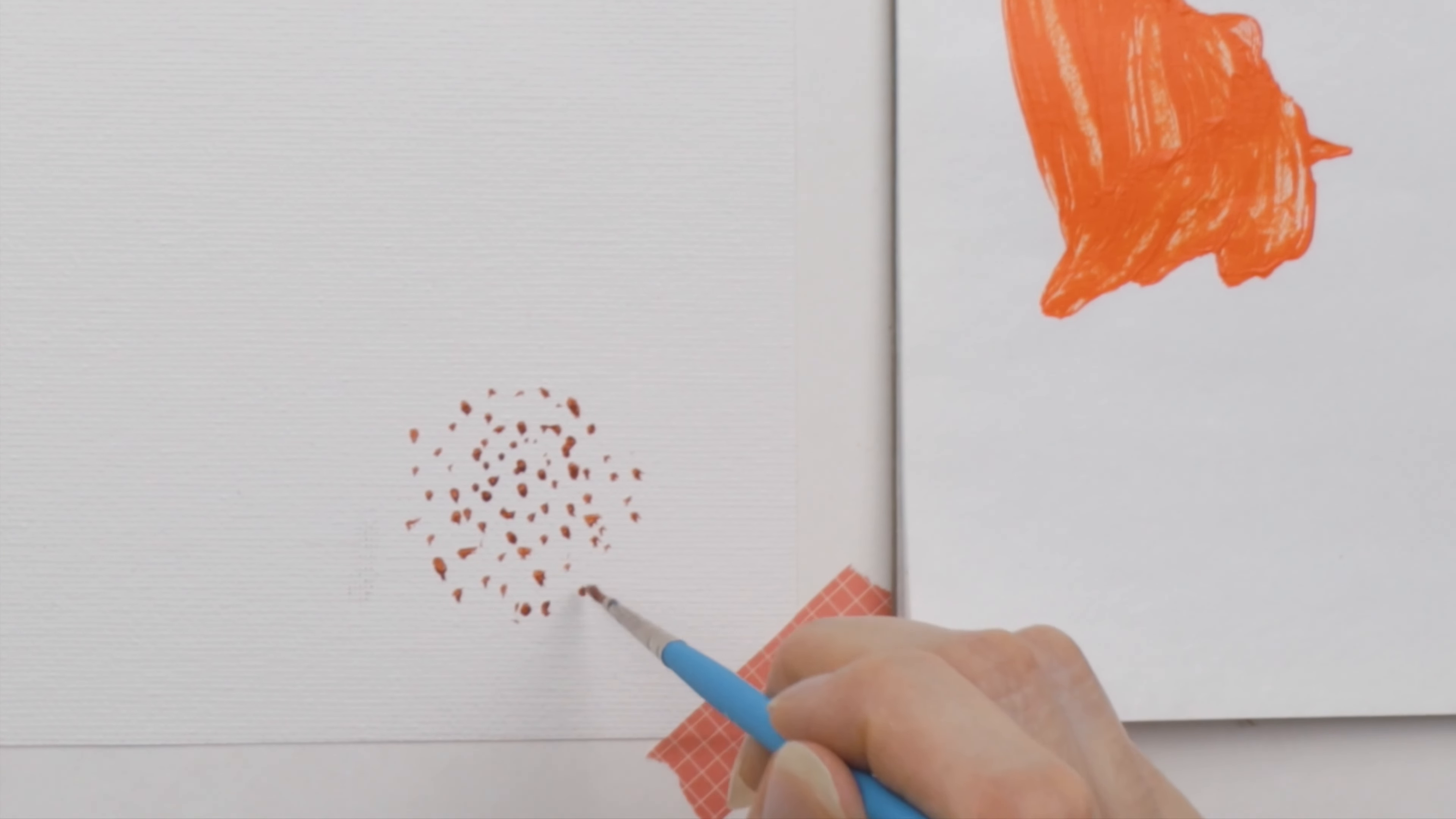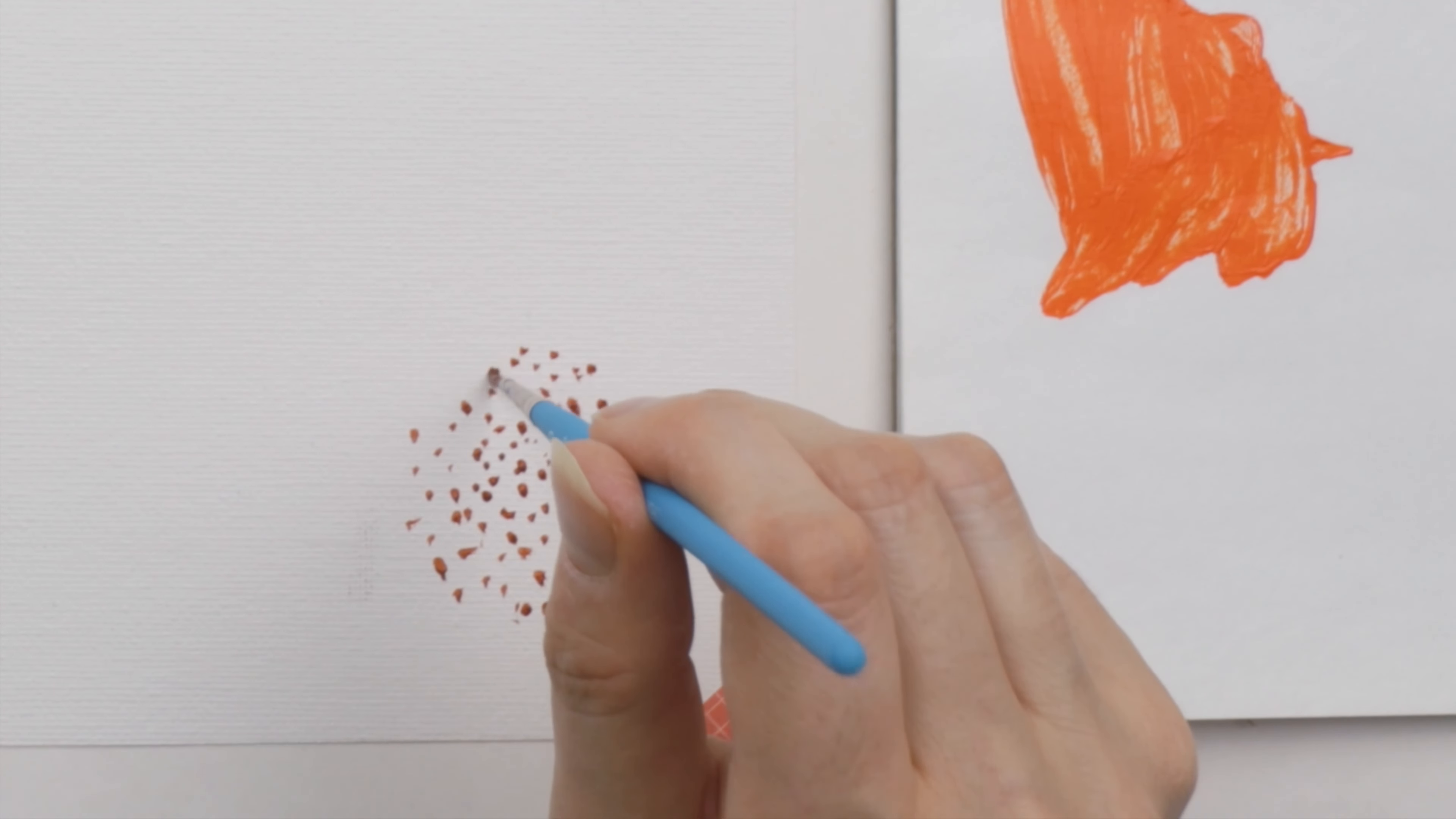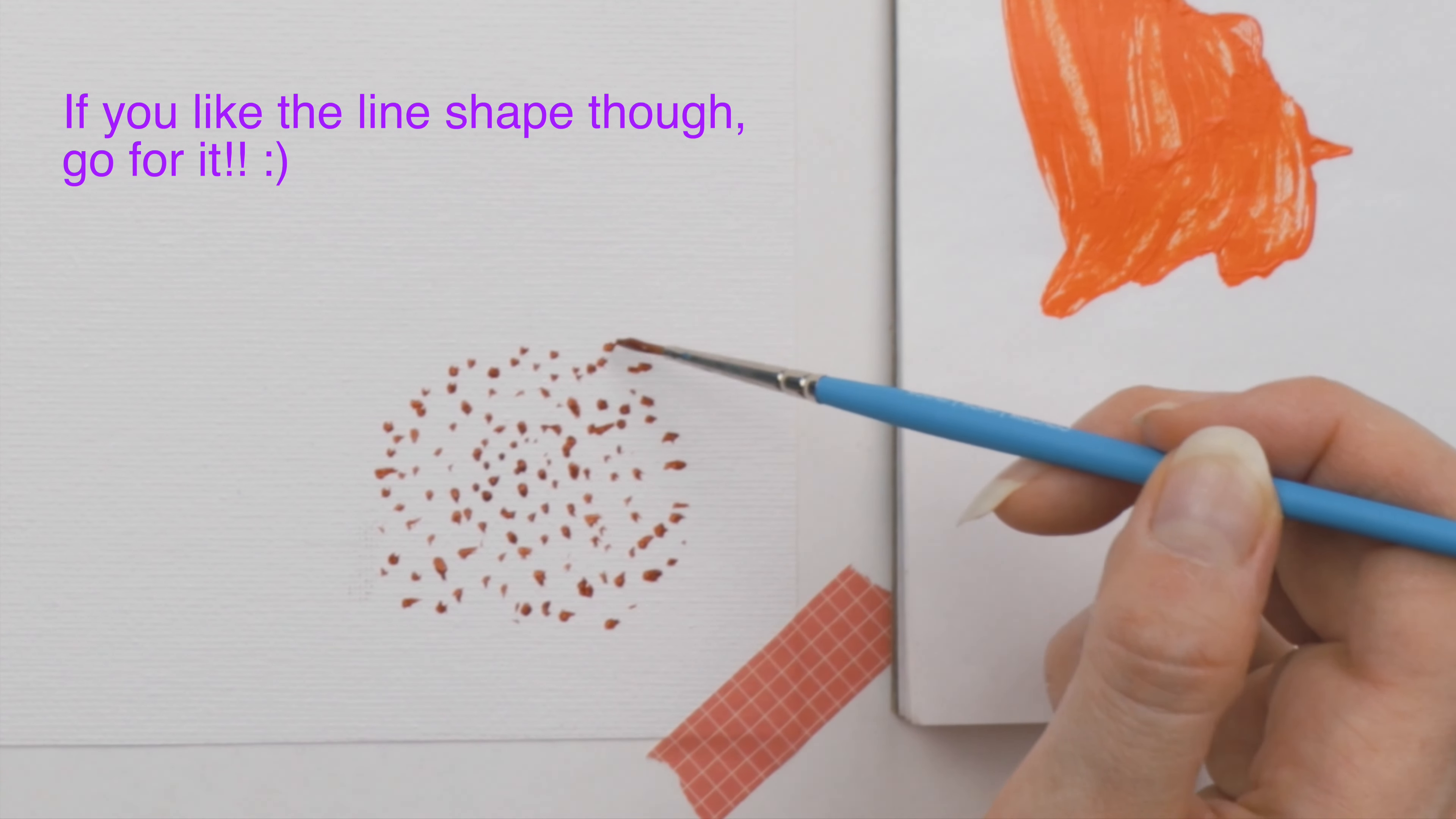When holding your brush, it helps if you hold it upright and you're basically stabbing the paper. It's a press and lift motion. Make sure not to linger too long on the paper or your dots will get kind of smushed. And also don't hold your paintbrush sideways too much or you might get lazier marks that are more of a line shape.